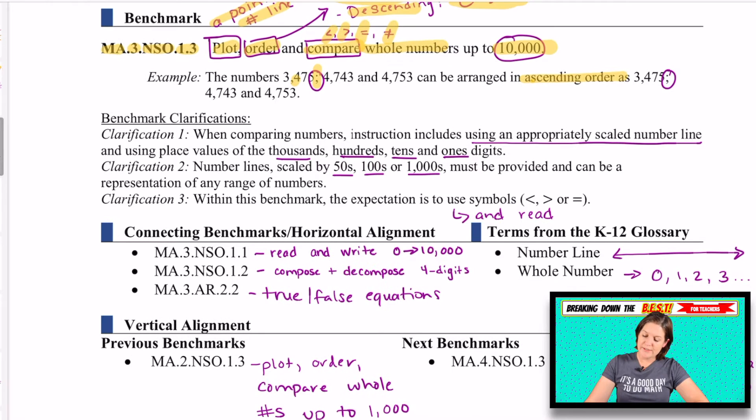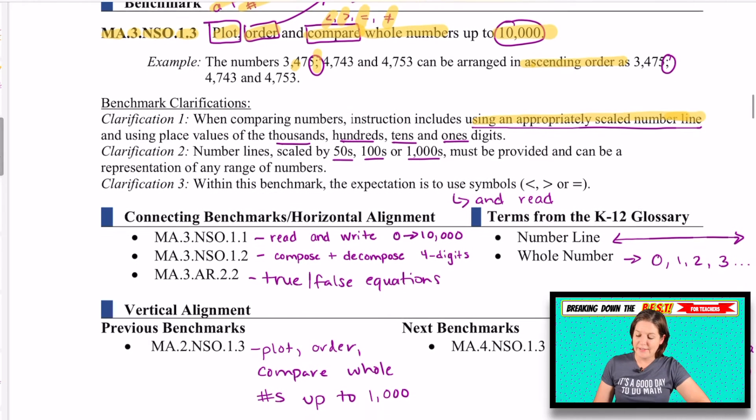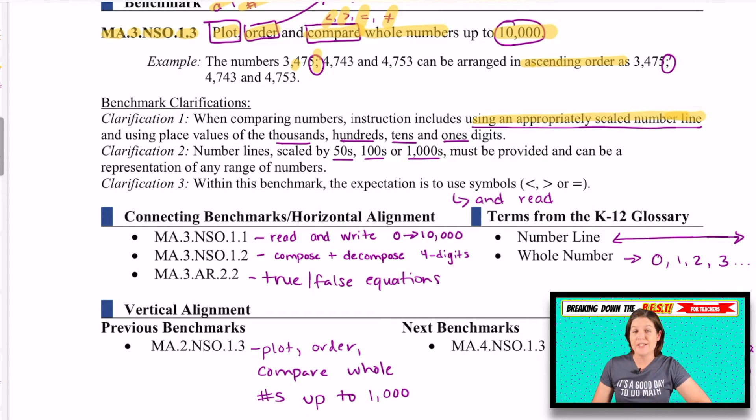Clarification number one says that instruction should include using an appropriately scaled number line. And in the resources that I have, I made sure to include that. We've got scaled by fifties, hundreds, or one thousands. And it says here, within this benchmark, the expectation is to use these symbols, but also to read them.